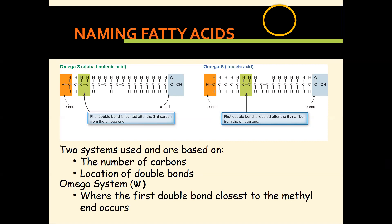When naming fatty acids, we look at the number of carbons and the location of the double bonds. We use the omega system, which starts from the methyl end of the chain. For example, if the first double bond is at the third carbon from the methyl end, we call it omega-3. If it's at the sixth carbon from the methyl end, we call it omega-6. Counting from the methyl group tells you whether it's an omega-3 or omega-6 fatty acid.